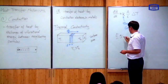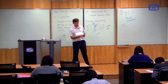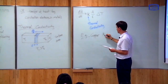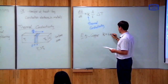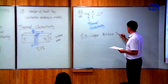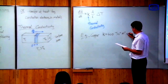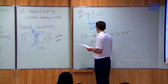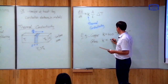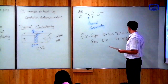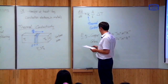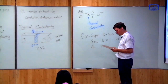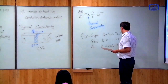For copper metal, kappa is approximately 400 joules per second per meter per kelvin — an example of a high thermal conductivity. For glass, kappa is approximately 1 joule per second per meter per kelvin. For air at atmospheric pressure and temperature, kappa is approximately 0.03 joules per second per meter per kelvin.